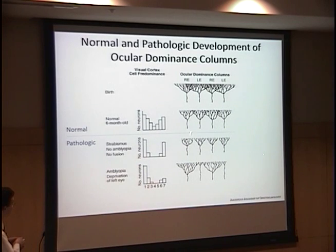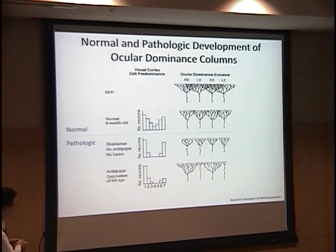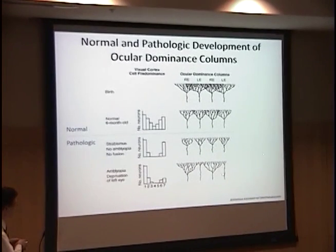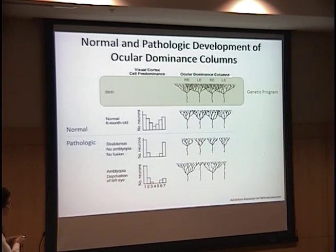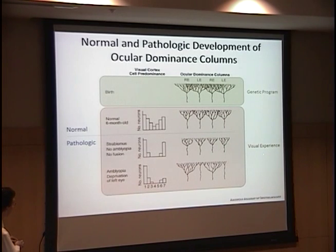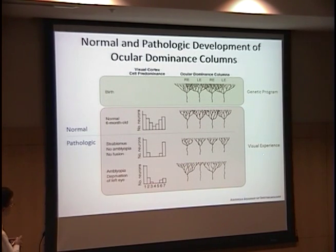In a situation where the left eye is deprived — where you have stimulus deprivation — you see that the size of these ocular dominance columns is significantly reduced in the left eye, and we see a shift of the whole curve towards the right. It's thought that generation of these ocular dominance columns initially is based largely on a genetic program, and that visual experience leads to the formation of these different patterns during the so-called critical periods.